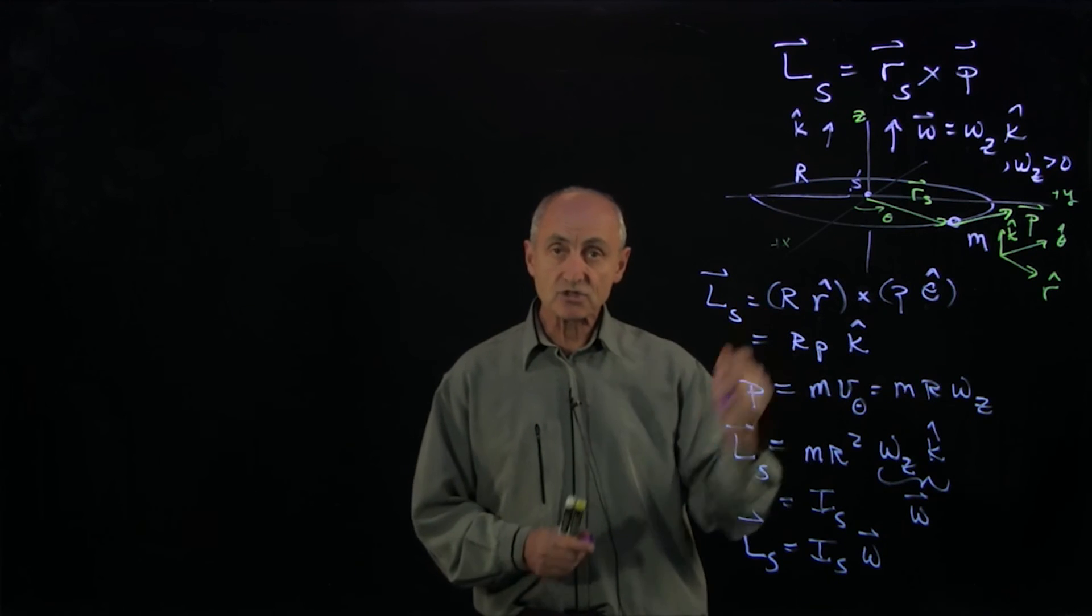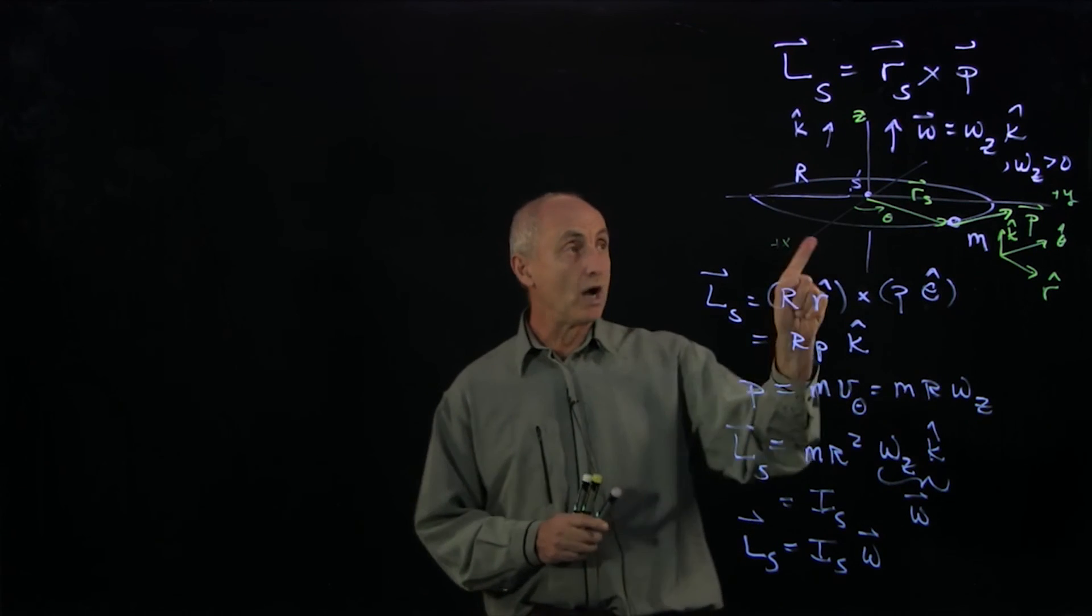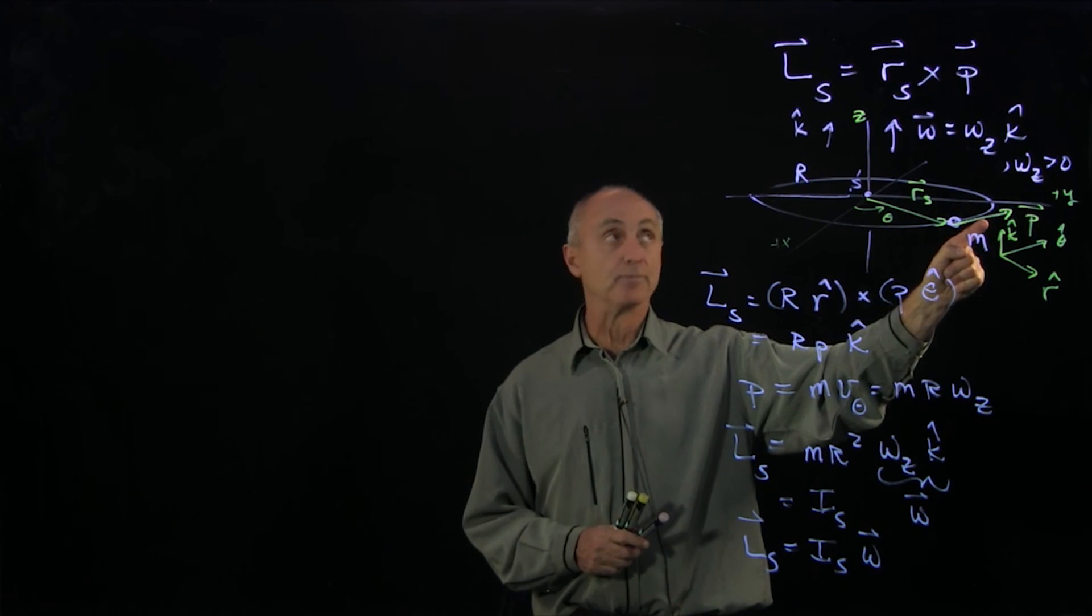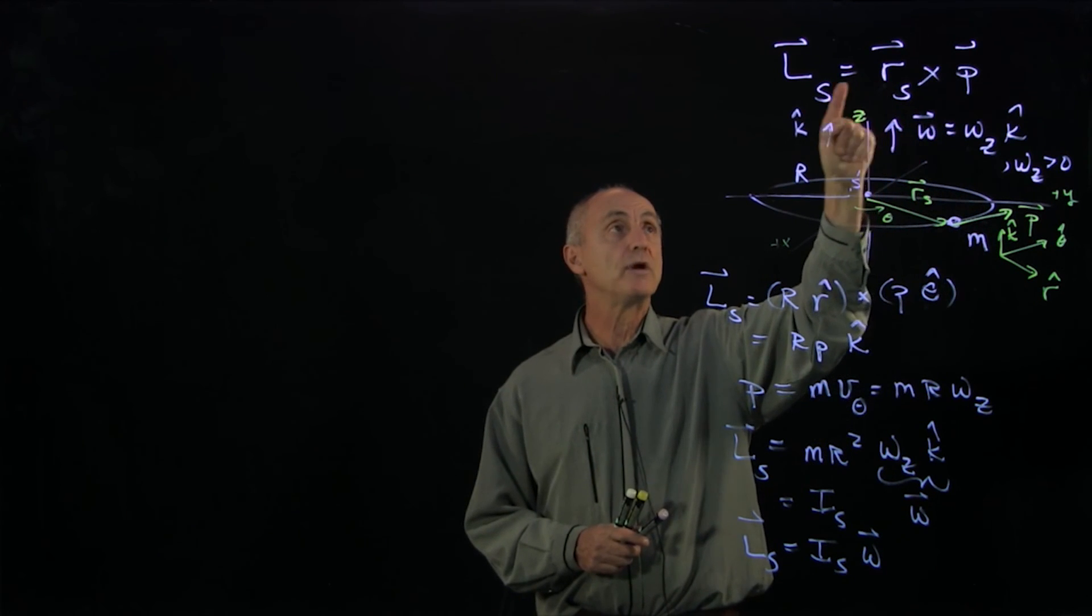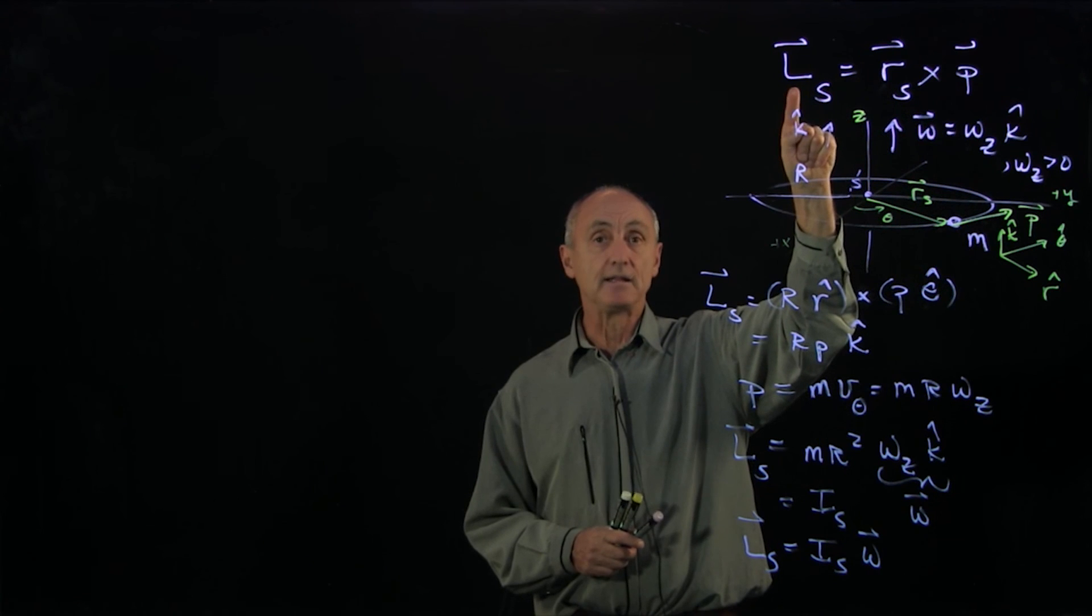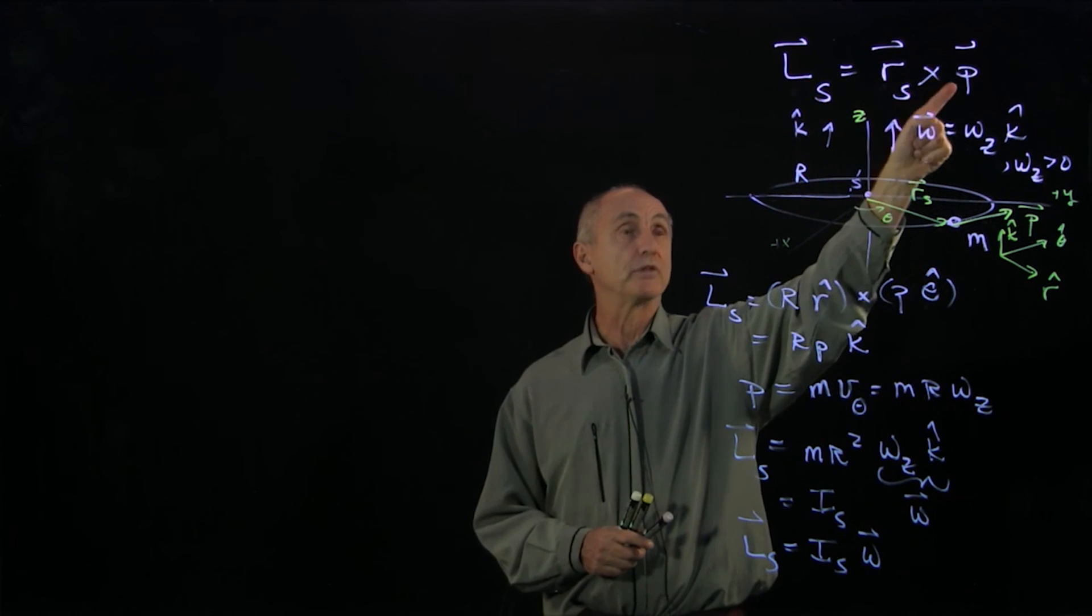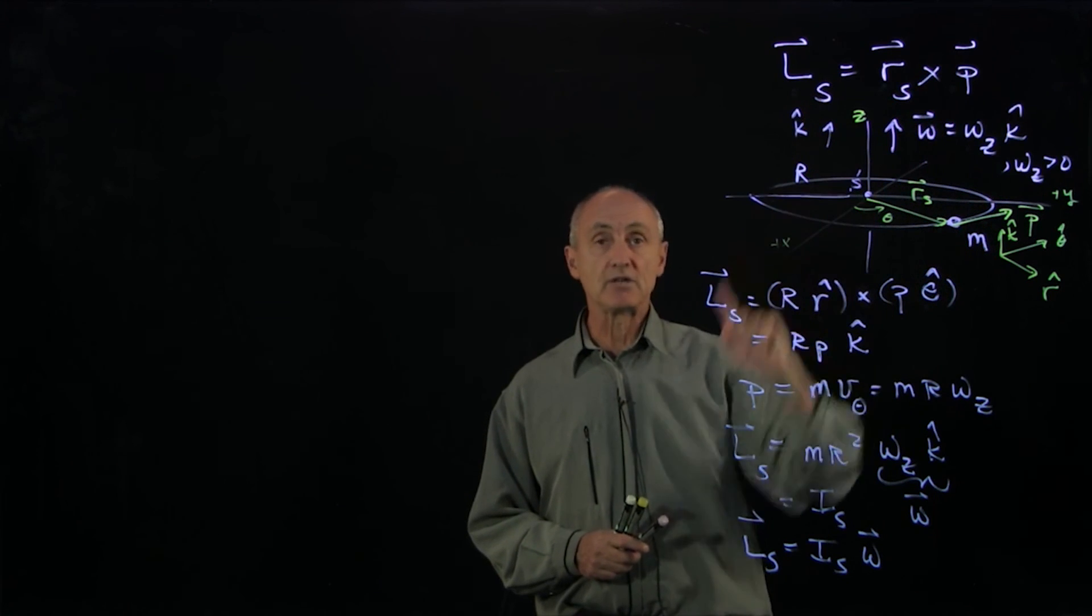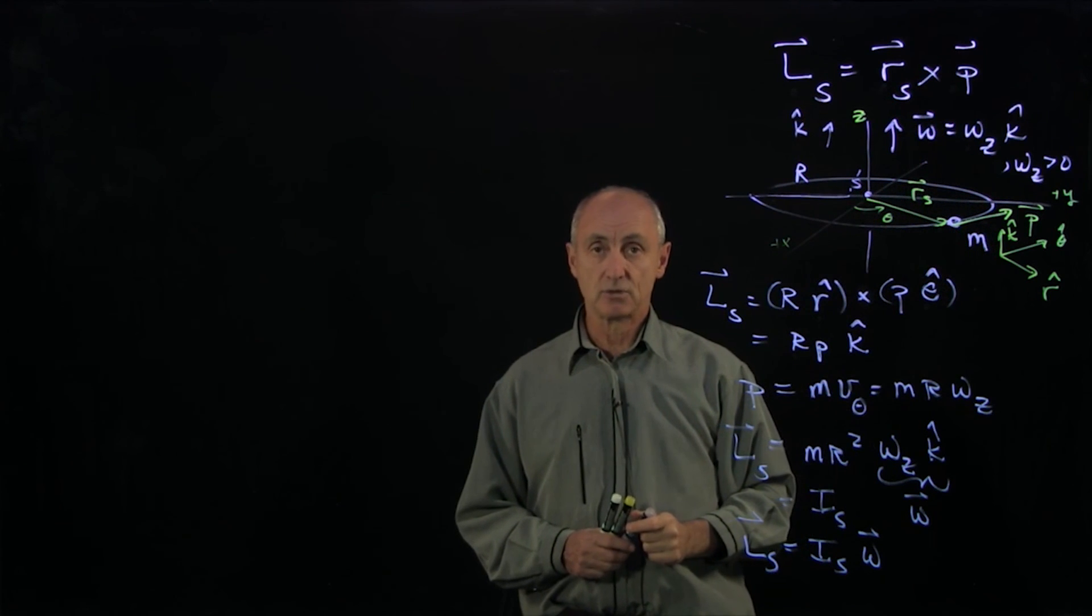Now that's no surprise in this particular case. Why? Because the vectors r_s and p are in the plane of motion. Whenever you take a cross product, L is perpendicular to both of those vectors, so it's perpendicular to the plane of motion. Therefore, L has to point in the z direction.